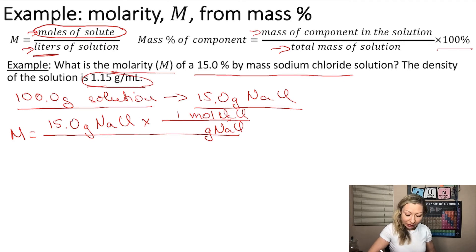and the molar mass of sodium chloride is 58.44 grams. Okay, so the grams will cancel, we will end up with moles, and that's what we want.